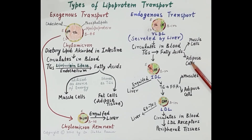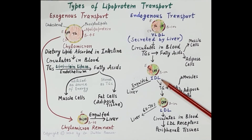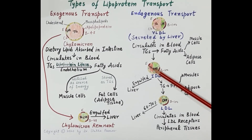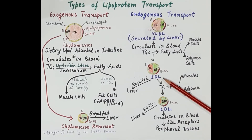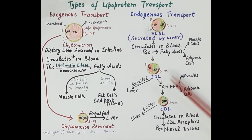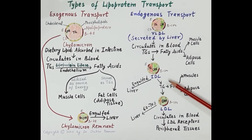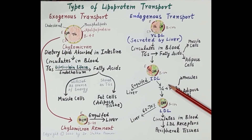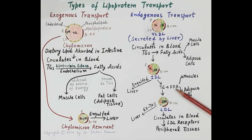Fatty acids from VLDL are utilized by muscle cells as well as by adipose tissue. The VLDL remnants are termed IDL — intermediate density lipoproteins. IDL contains comparatively less triglycerides and its size reduces to about 30–35 nanometers. About half of the IDL is engulfed by the liver, while the remaining 50% circulates in the blood, where lipoprotein lipase again hydrolyzes the triglycerides stored in IDL.